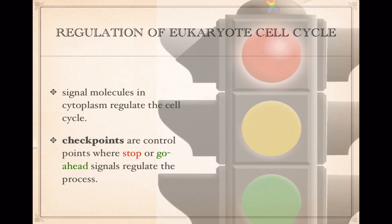These signal molecules are going to be controlling the cycling of the cell. Remember, a cell is reproducing when it goes through the cell cycle. In the cell cycle itself, there are what we call checkpoints, which are points where the system can be stopped or given the go-ahead. These are the regulation points in the cell cycle.